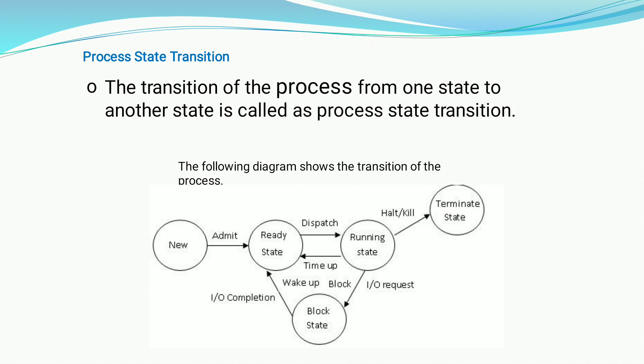The transition of the process from one state to another state follows the round robin method. In this method, each process is given a time slice. When the time slice expires for a process, it is always put back in the ready state because it is not waiting for any external event such as an IO operation — it is only waiting to run on the CPU.